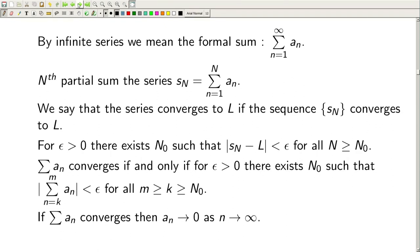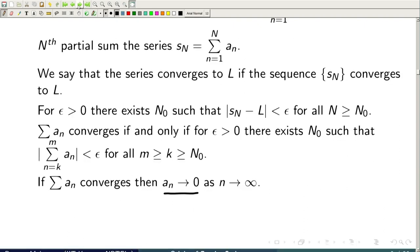If a series converges, the nth term must go to 0 — since a_n = S_n − S_{n−1} → 0. This is a necessary but far from sufficient condition; for example, Σ 1/n diverges.